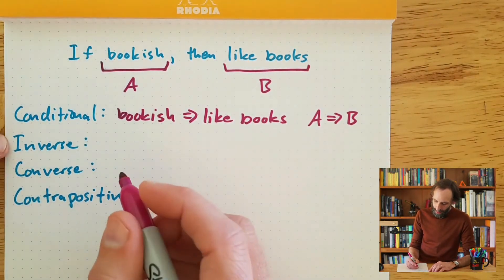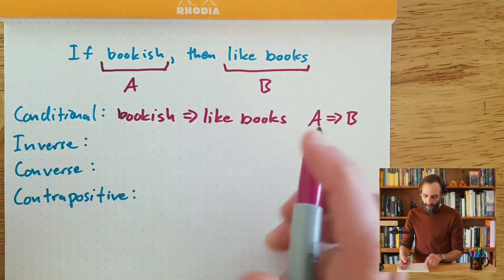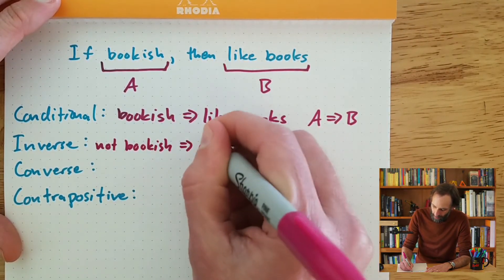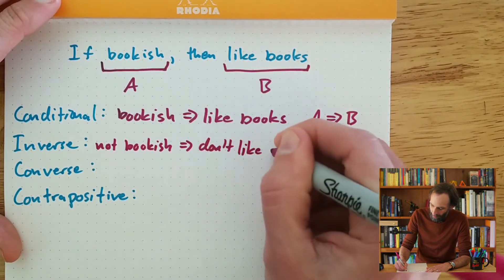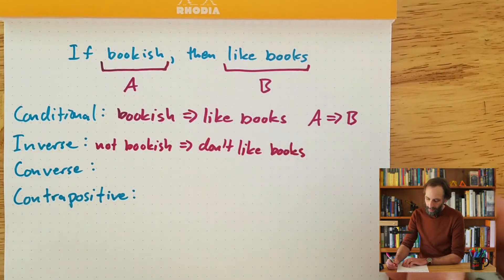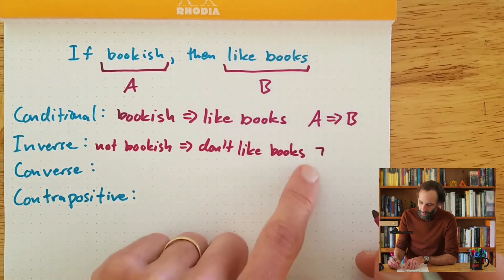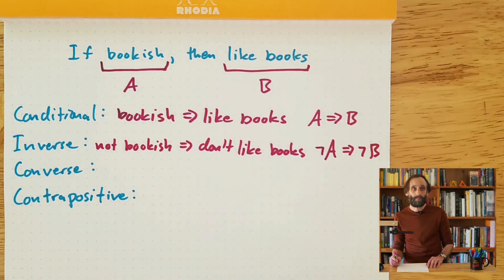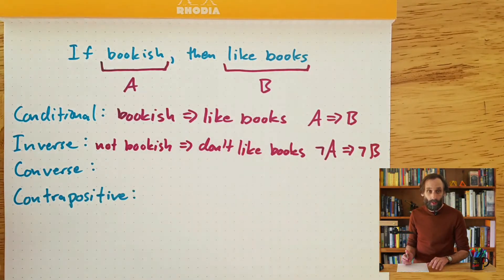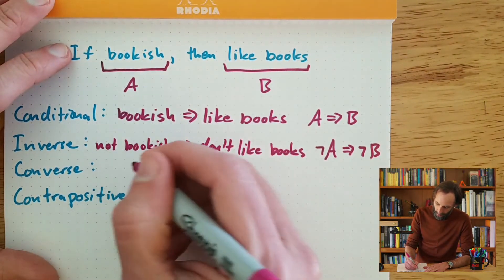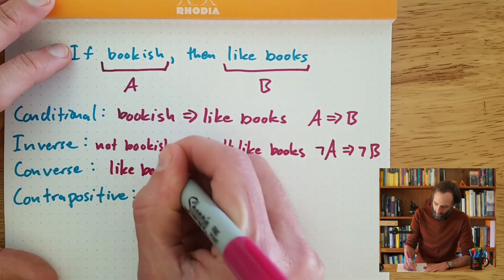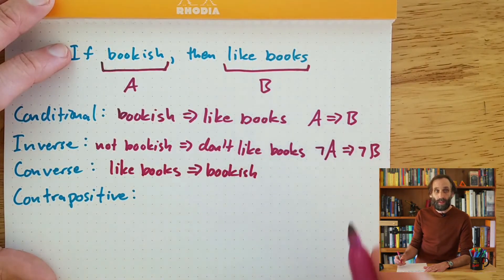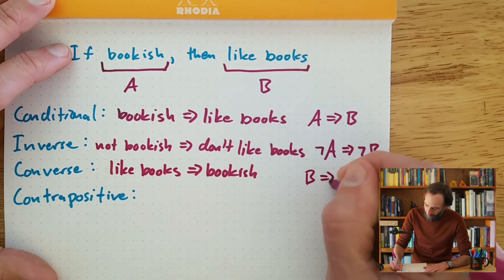For the inverse, we take the negation of both the first and second parts: not bookish implies don't like books. Symbolically, I use this little symbol for 'not,' so we write: not A implies not B. For the converse, we change the order — we take part B and put it at the beginning: like books implies bookish. Symbolically, we write that as B implies A.